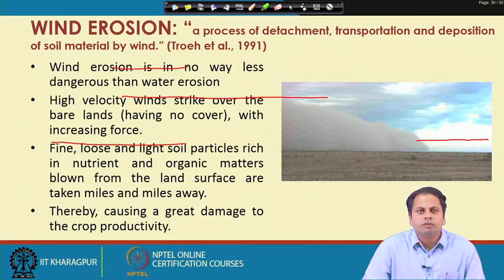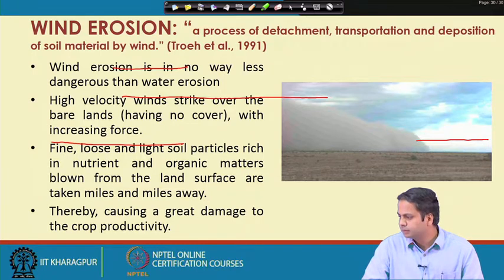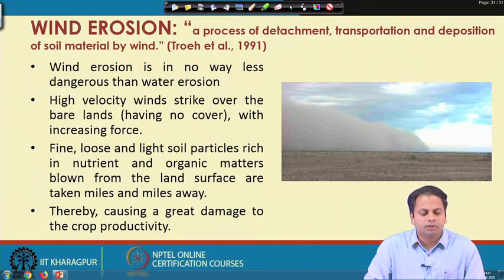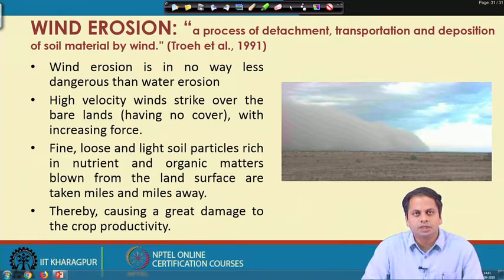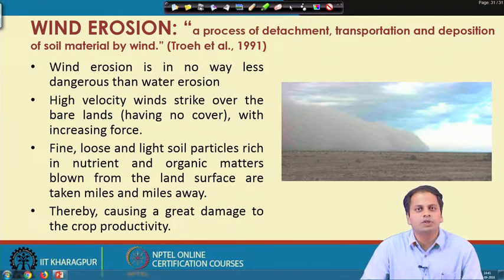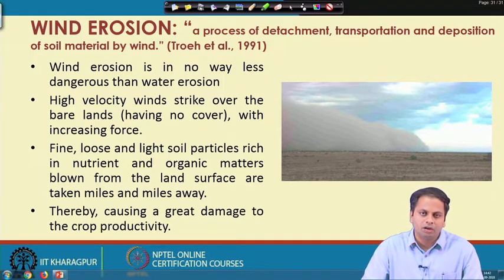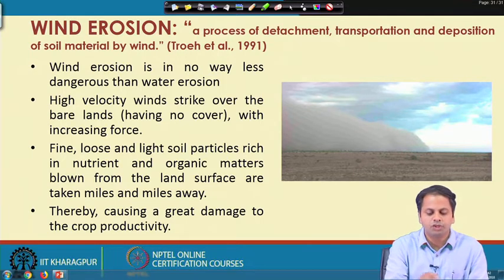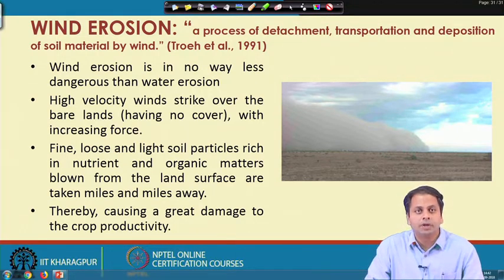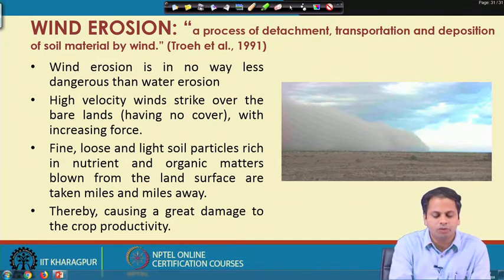Wind erosion is a process of detachment, transportation, and deposition of soil material by the wind. It is a combination of three steps: first, the detachment of loose or fine-grain soil particles from the surface; then the transportation of those particles from one place to another; and finally, deposition at a place far away from where detachment started. Wind erosion is no less dangerous than water erosion.